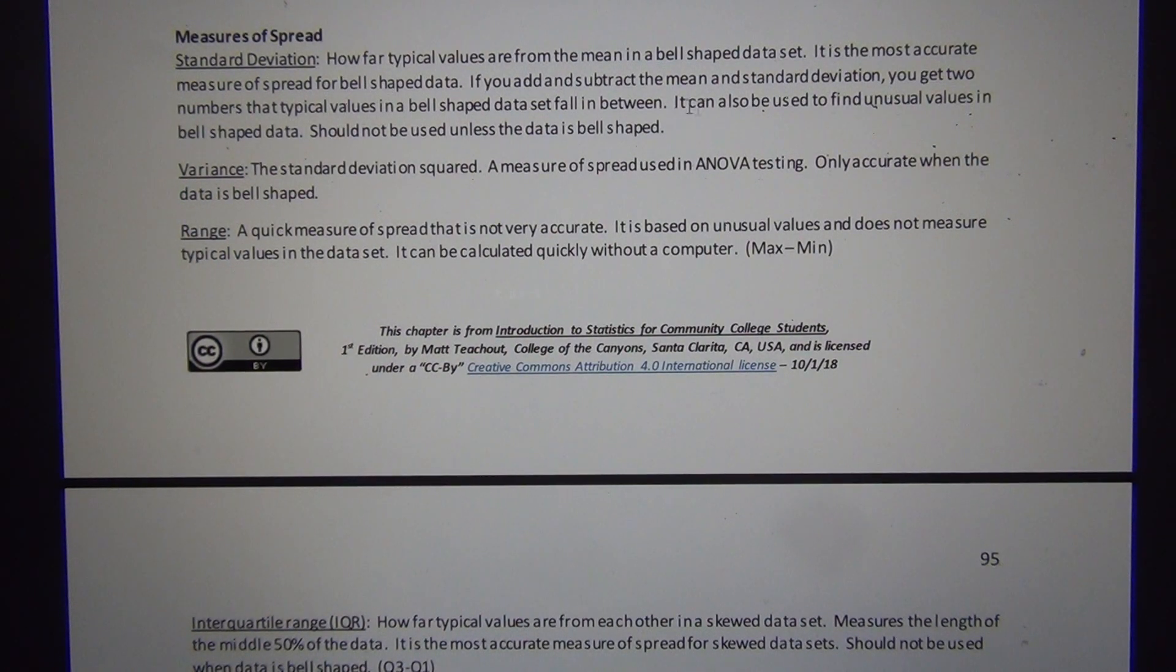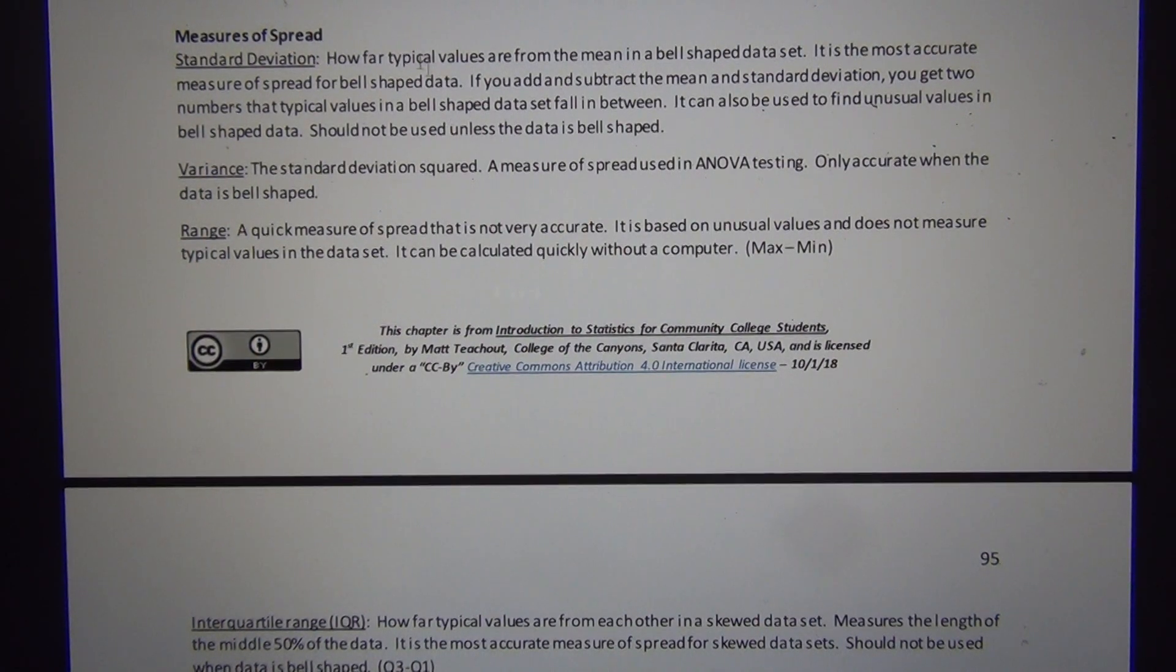Standard deviation was how far typical values are from the mean in a normal data set. The standard deviation was our most accurate spread calculation for normal data. This is a very famous measure of spread in statistics. But remember that it only is accurate if the data is normal.